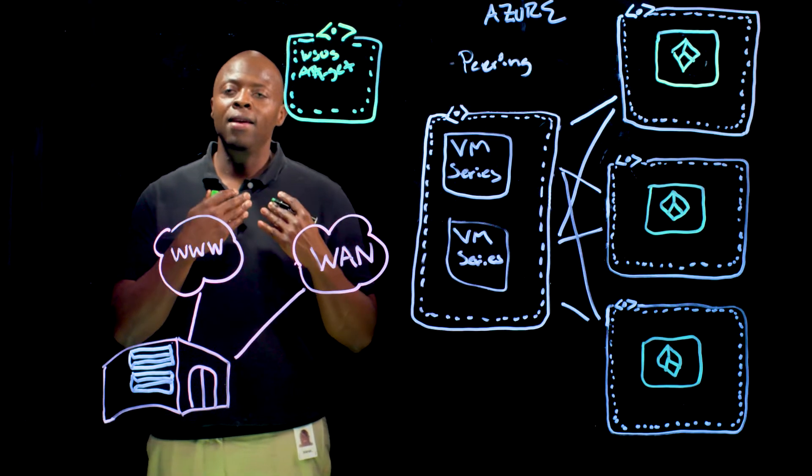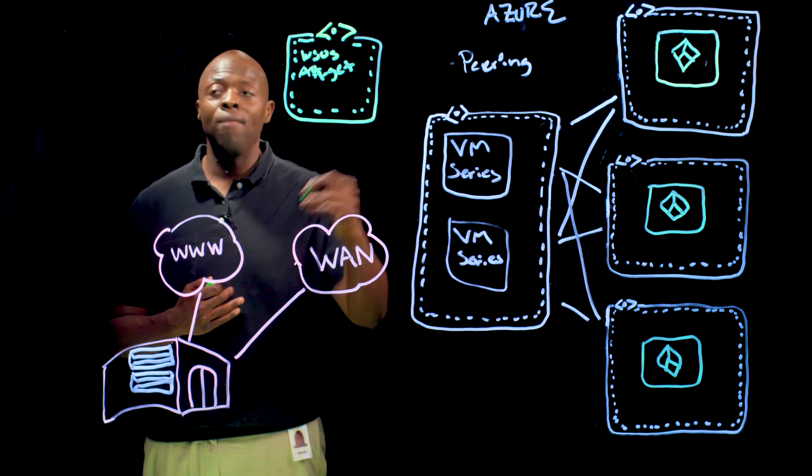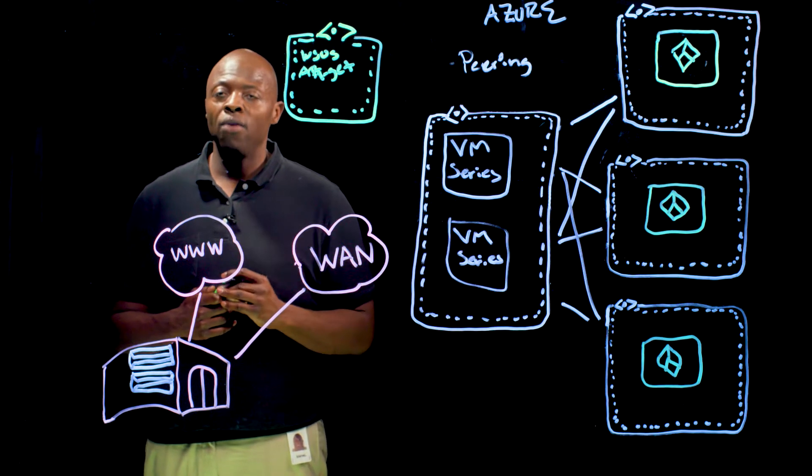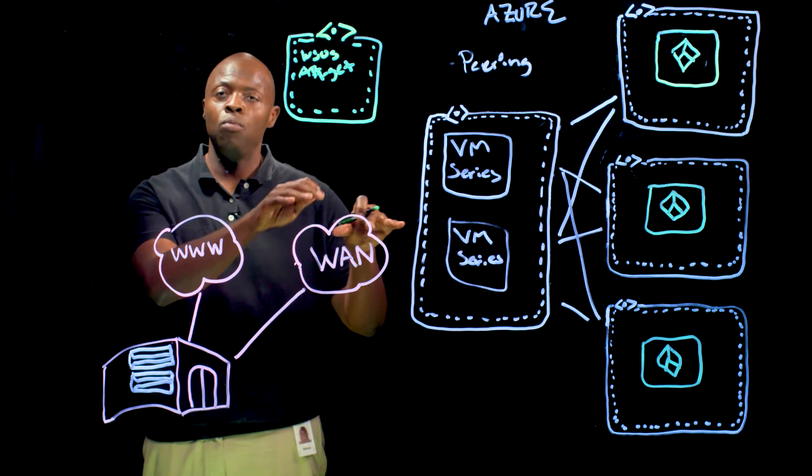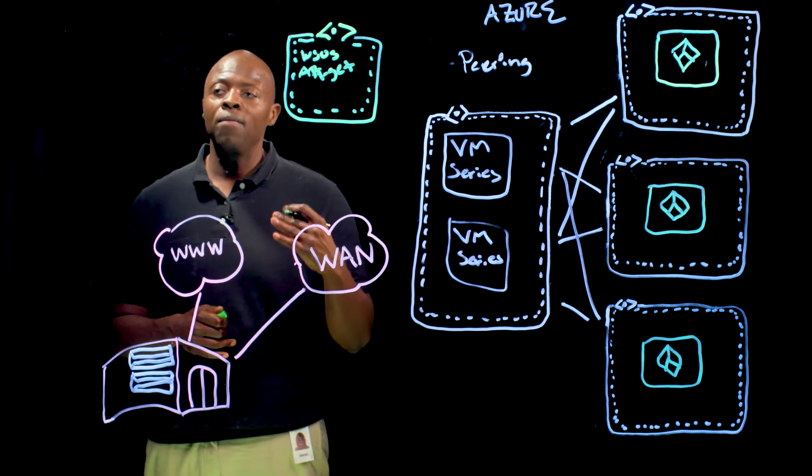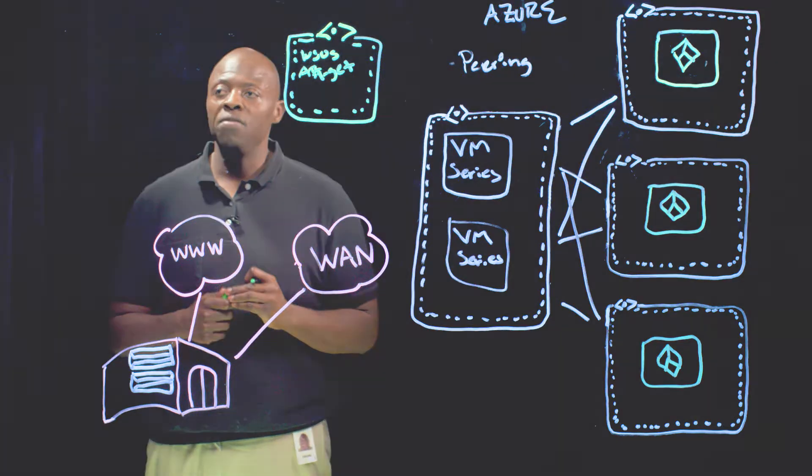As you can see here, we take the exact same approach for east-west traffic as we do for north-south traffic, because sometimes the traffic that is within the network is the traffic that we really need to understand the most. We've discussed the transit VNet architecture and how we address outbound traffic.